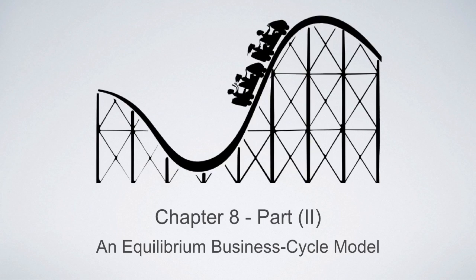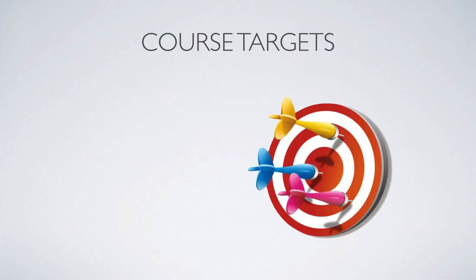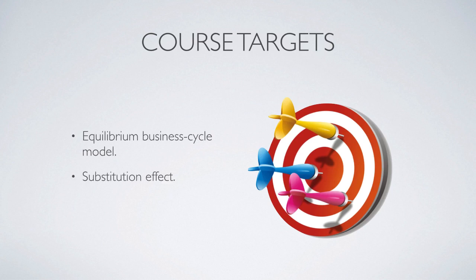Hi everyone, it's time to learn macroeconomics again. We are going to finish chapter A, an equilibrium business cycle model. For the second part of this chapter, we are going to learn how to use the equilibrium business cycle model to explain the stylized facts of business cycle, and then we are going to learn substitution effect, especially its role on labor supply decision.